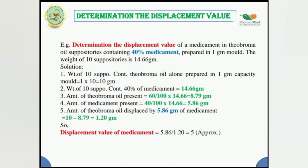Step three: amount of theobroma oil present = 60/100 × 14.66 = 8.79 grams. Step four: amount of medicament present = 40/100 × 14.66 = 5.86 grams. Step five: amount of theobroma oil displaced by 5.86 grams of medicament = 10 − 8.79 = 1.20 grams. Therefore, the displacement value = 5.86 ÷ 1.20 = 5. The displacement value of the medicament is 5.